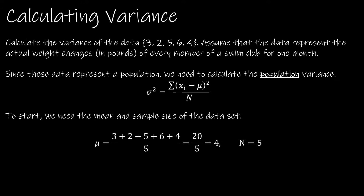In our example, we have a very small data set: 3, 2, 5, 6, 4. We're going to assume the data represent actual weight changes of every member of a swim club. Because it says every member, it tells us it's a population and not a sample. If it said a sample, we would use n minus one instead.